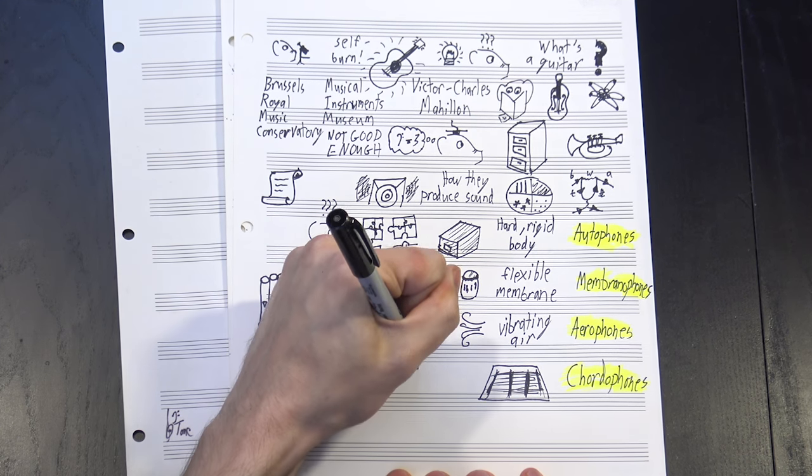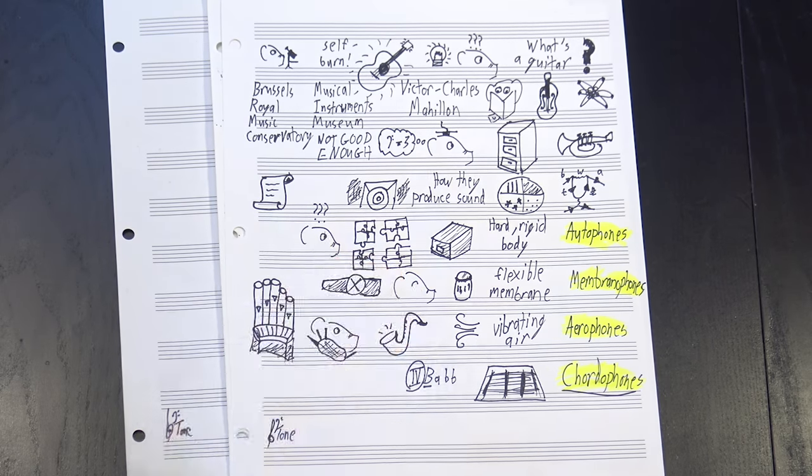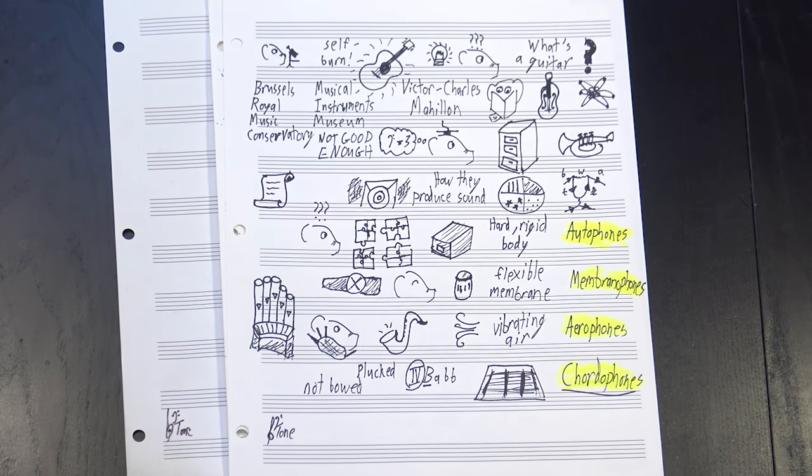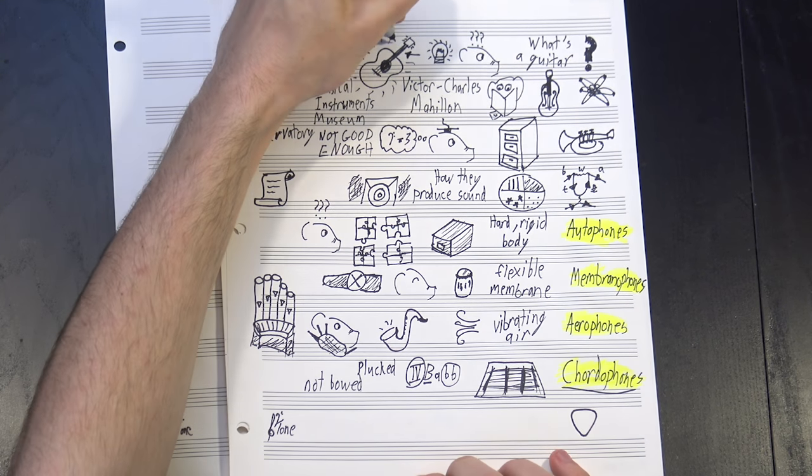For instance, a guitar's full classification looks something like this. The four marks it as a chordophone. This B means it's plucked, not, say, bowed like a violin. The A means it's played with a pick, and these two Bs tell you that it's got a neck.